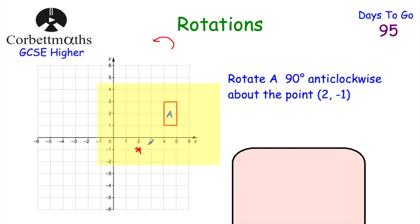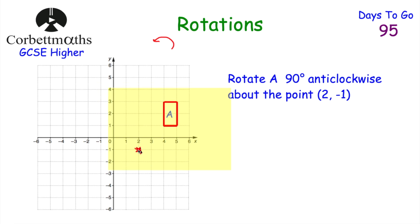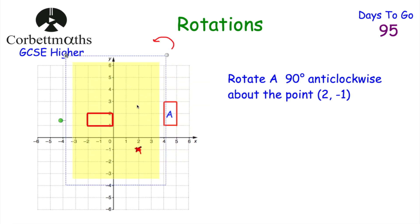Then I would trace the rectangle — draw over the top of it. Notice that my tracing paper is landscape. Whenever putting the tracing paper down, make sure it's either landscape or portrait. The reason is that when we rotate 90, 180, or 270 degrees, we know where it should be. So we've traced over the centre of rotation and over the shape. Then I put my pencil on the centre of rotation and rotate the tracing paper 90 degrees anti-clockwise, keeping it landscape to portrait.